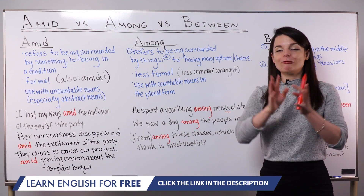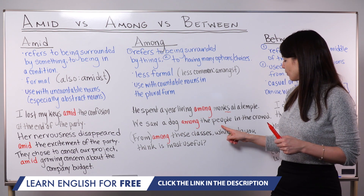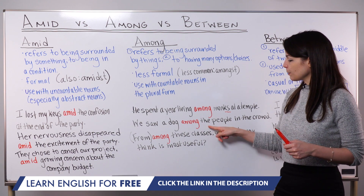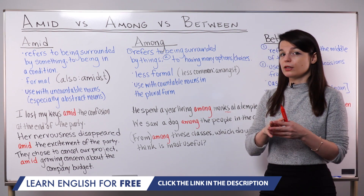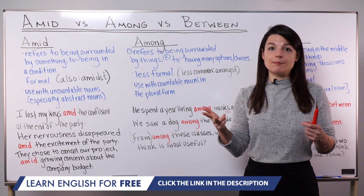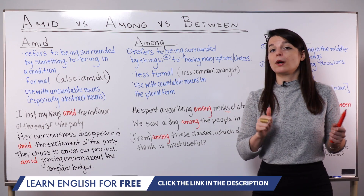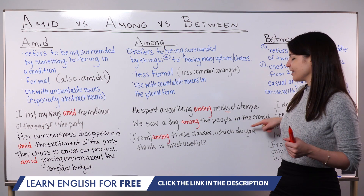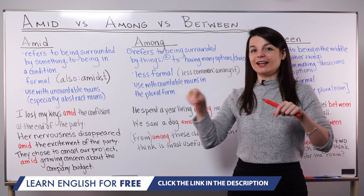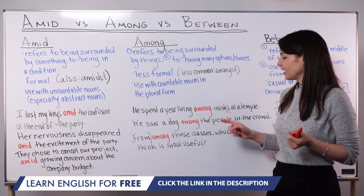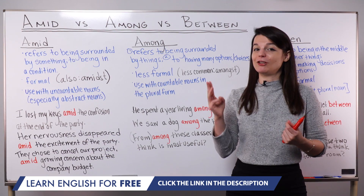Another example: We saw a dog among the people in the crowd. My noun is the people. We can use among to refer to groups of people — a class, a crowd, or a team, for example. The group is made up of individuals, and the dog is one object or creature inside this group. We would not use amid here — it sounds better to use among because we want to emphasize the individuals there in the group.